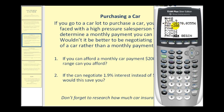So if we're looking for a car, we should look for one that's roughly in this price range — hopefully a little bit less. Now the second question states: if we can negotiate an interest rate of 1.9% instead of 5.9%, how much would that save us?